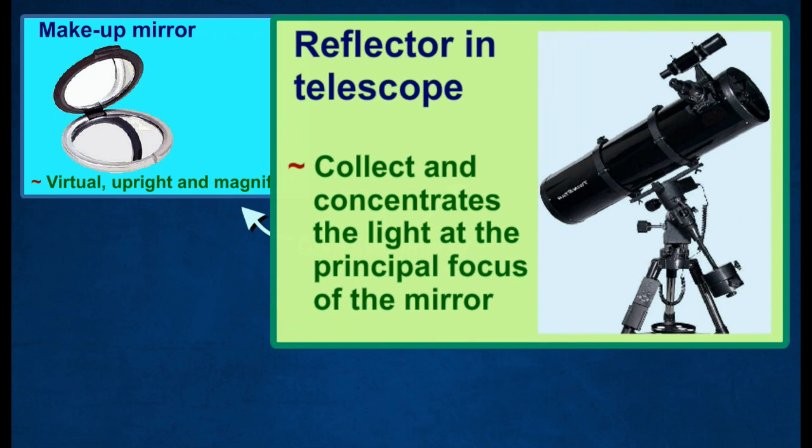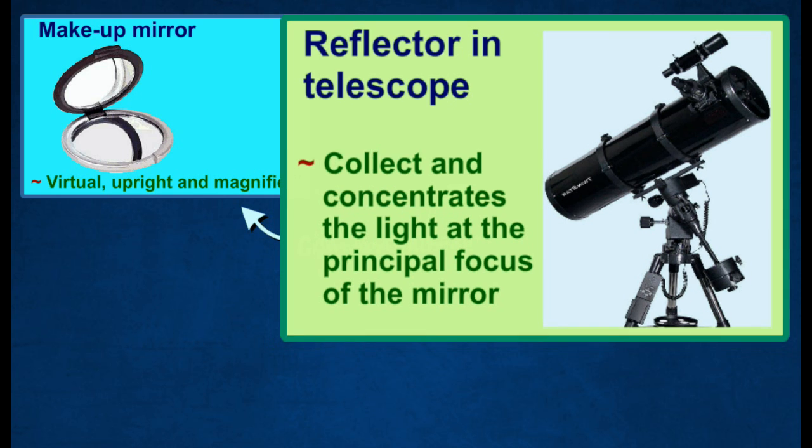A concave mirror is placed at the bottom of telescopes to collect and concentrate the light at the principal focus of the mirror. The image is produced at the principal focus.